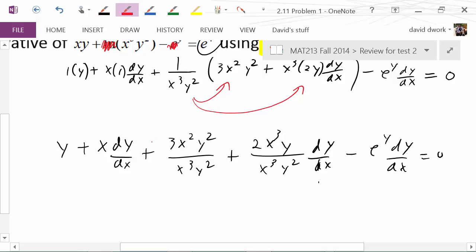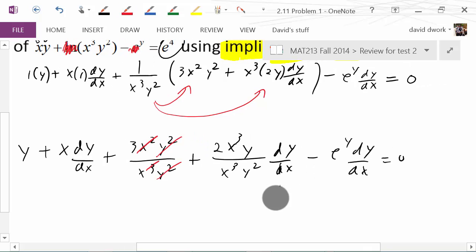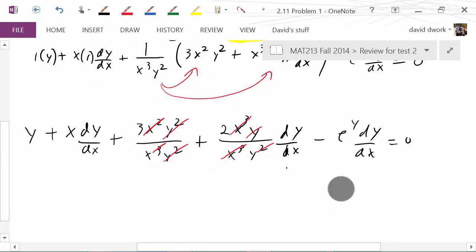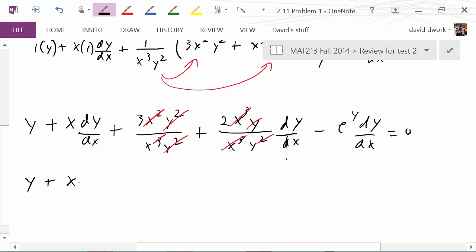The first term, nothing we can do, leave it alone. Second term, nothing we can do, leave it alone. Third term, ha ha ha. Look, we have an x squared in the numerator and x cubed in the denominator, so that's just going to leave us with an x. I have y squared divided by y squared, so that's divided completely. Over here, on the next term, we have an x cubed divided by x cubed, and then a y divided by y squared. So once we kind of clean all that up, we'll be left with y plus x dy dx plus 3 over x plus 2 over y dy dx minus e to the y dy dx equals 0.